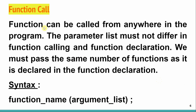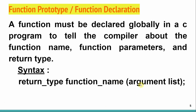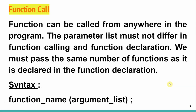The second important component is the function call. A function can be called from anywhere in the program. The parameter list must not differ between the function call and function declaration — you must pass the same number of arguments as declared in the prototype. Function calling refers to invoking the program so that whatever operation or task you want to do can be performed. The syntax is to write the name of the function and pass the argument list. If you declared two input arguments in the prototype, you must also write exactly two when calling, otherwise a compilation error will occur.